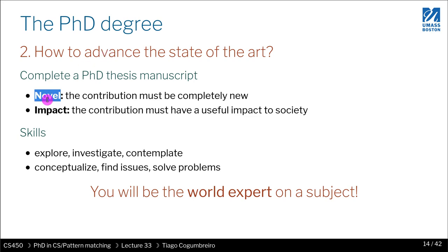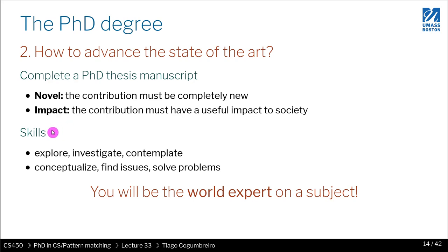You have to show that your work is novel — completely new, something no one has done before. Not only that, it must be useful. In computer science, you have to have measurable impact on society or at least on a smaller community. The skills you need to achieve this goal include the ability to explore, investigate, contemplate, conceptualize, find issues, solve problems, figure out how other people's software works, and do archivist work in finding all the references. Some people find that exciting, some don't — but if you are doing a PhD, you will definitely need to do it.